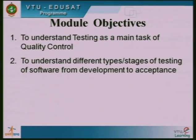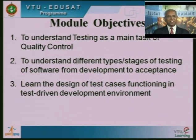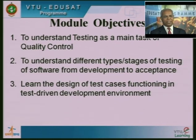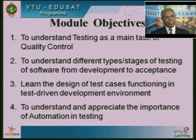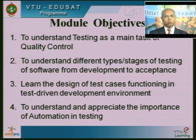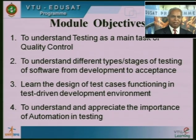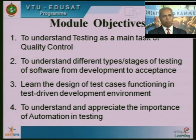The objectives of this module are: first, to understand testing as the main task of quality control of the software; to understand different types and stages of testing from development stage to final acceptance till the software is delivered to end users; learn the design of test cases to ensure software quality; and understand the importance of automation in testing, since testing is a main activity in software development. We also try to understand what are the issues involved in automation of testing.